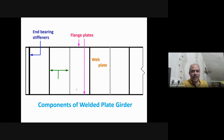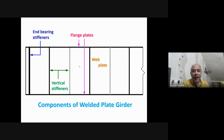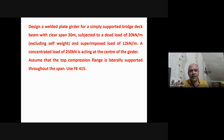Next, we have end bearing stiffeners, provided at the supports where we have large reactions — these are different from vertical stiffeners. We also have vertical stiffeners shown as solid and dotted lines, where the solid line is on the front side and the dotted line is on the back side of the web plate. Sometimes stiffeners are provided alternately on one side, and in some cases on both sides, depending on design requirements.